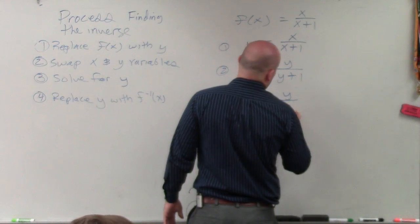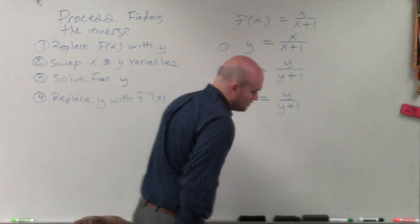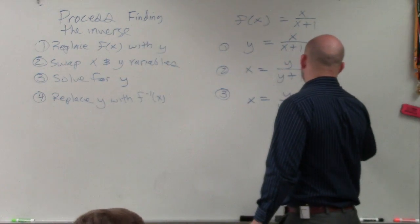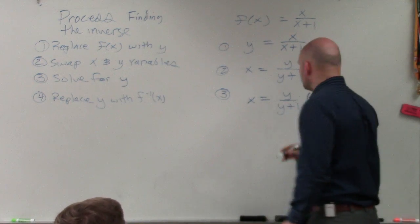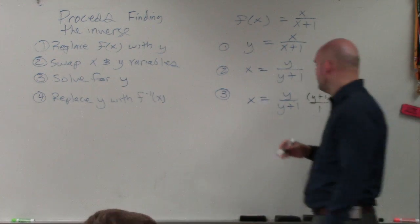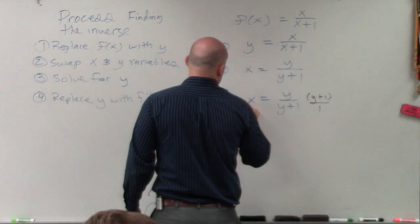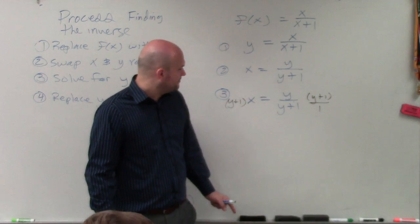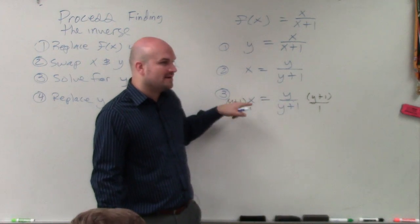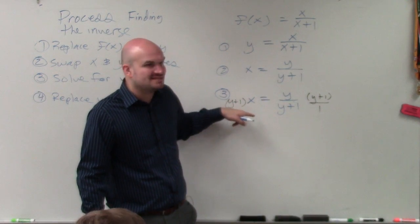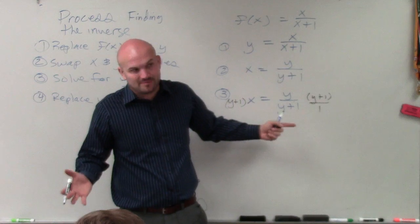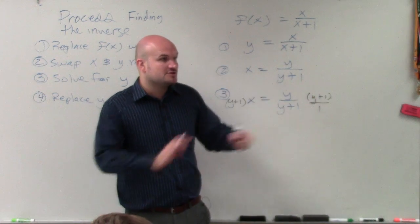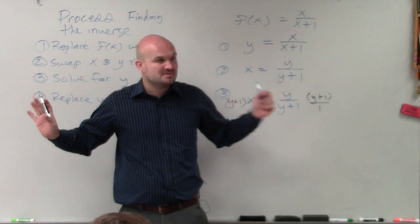So to get y off the denominator, what I'm going to do is multiply by the reciprocal of my denominator, which is just going to be y plus 1 over 1. I'm not going to multiply by y plus 1 over y, because then you still have a y in the denominator. I don't want a variable in the denominator. So I'm just going to multiply by the denominator in the numerator, so then it will divide to 1.